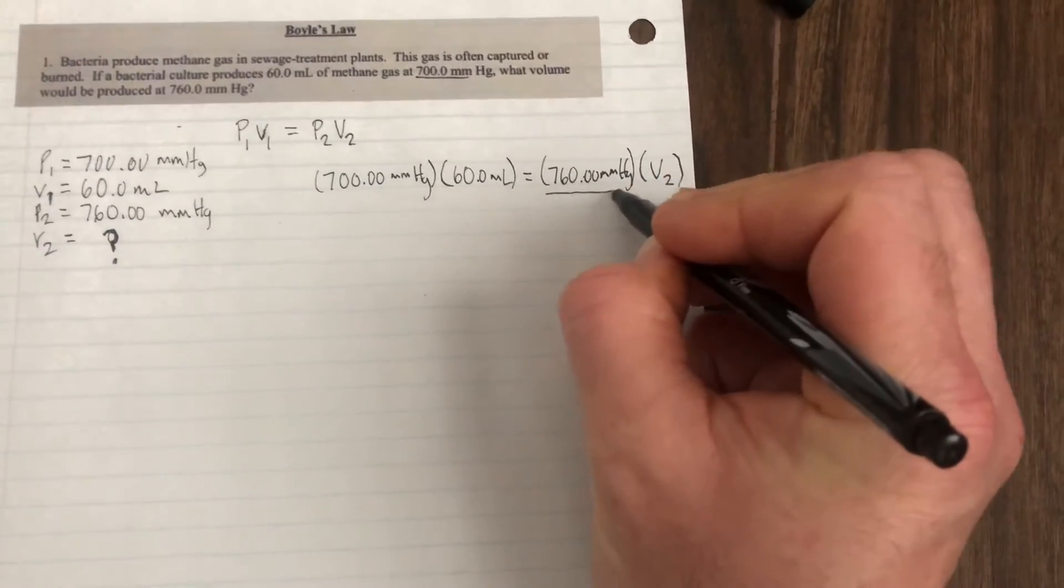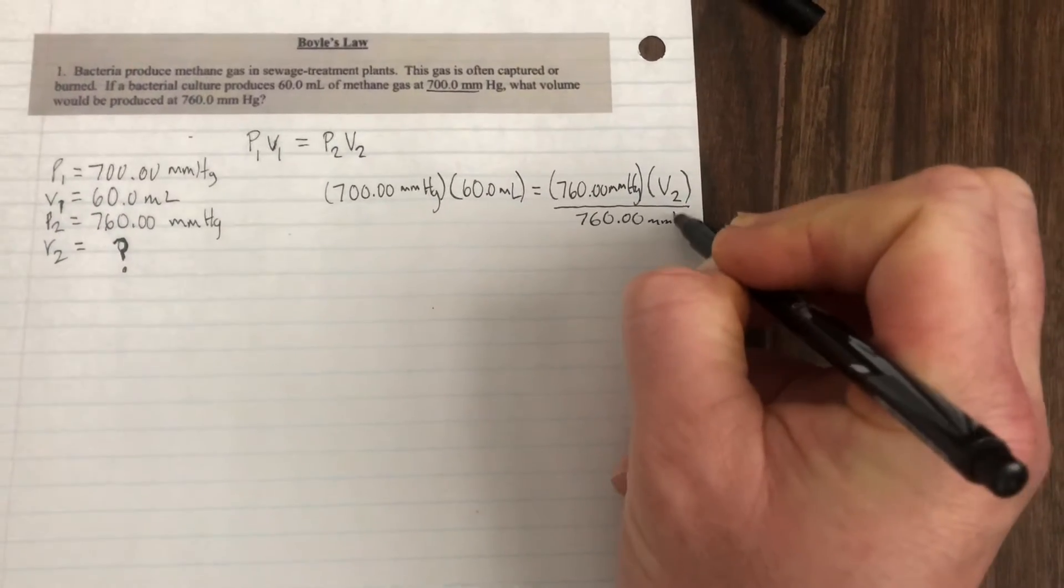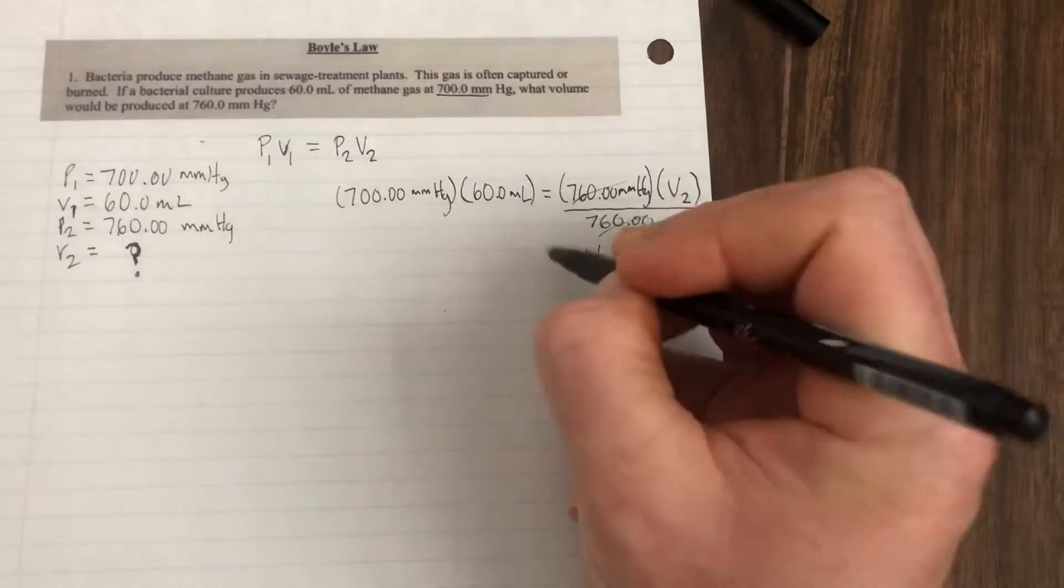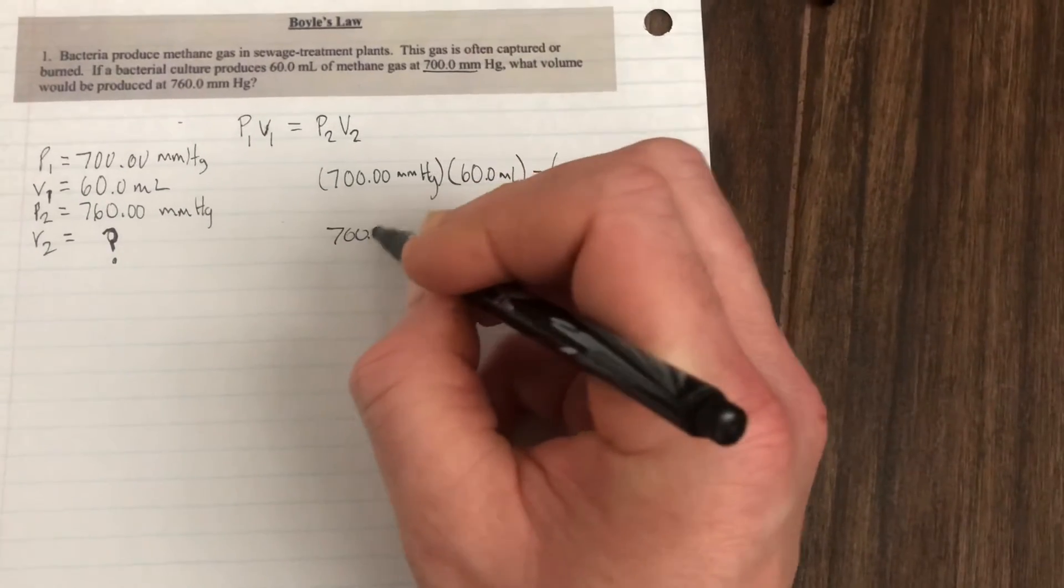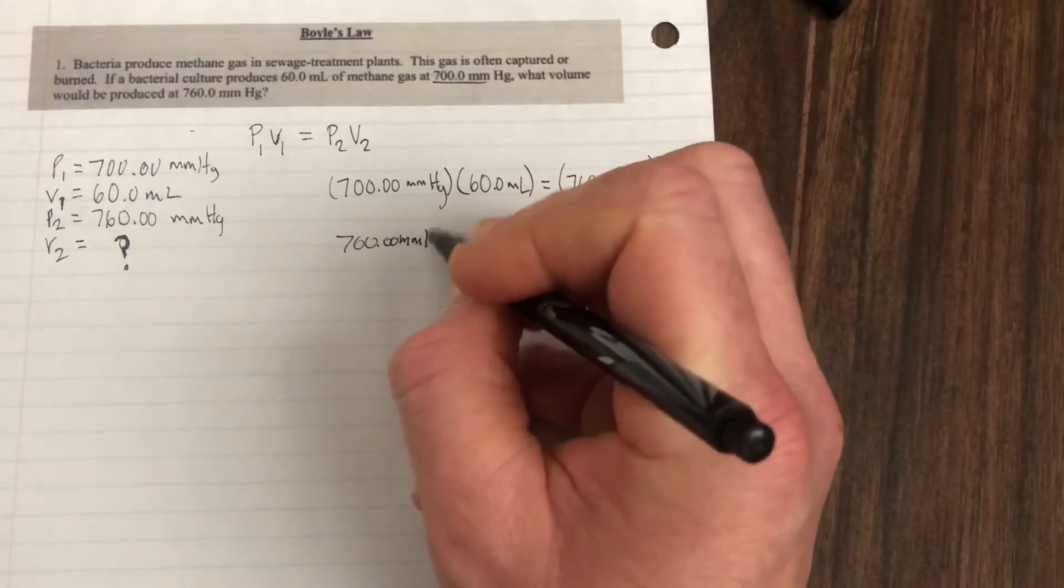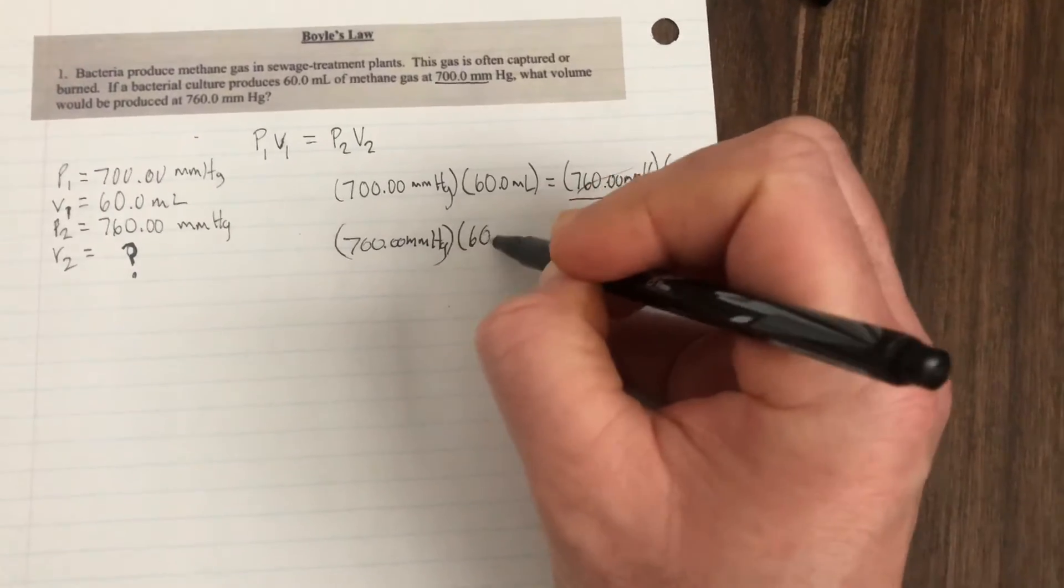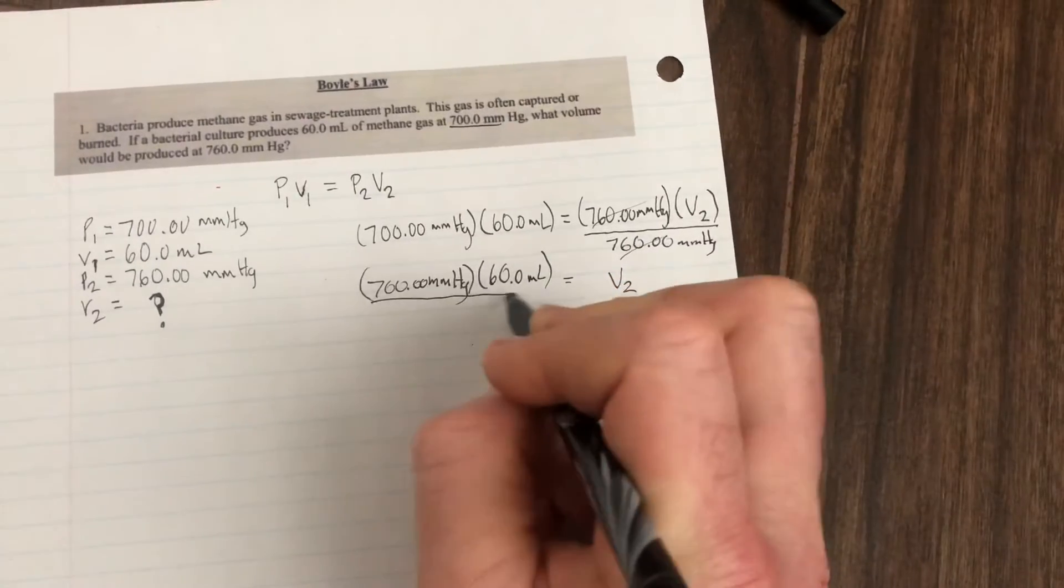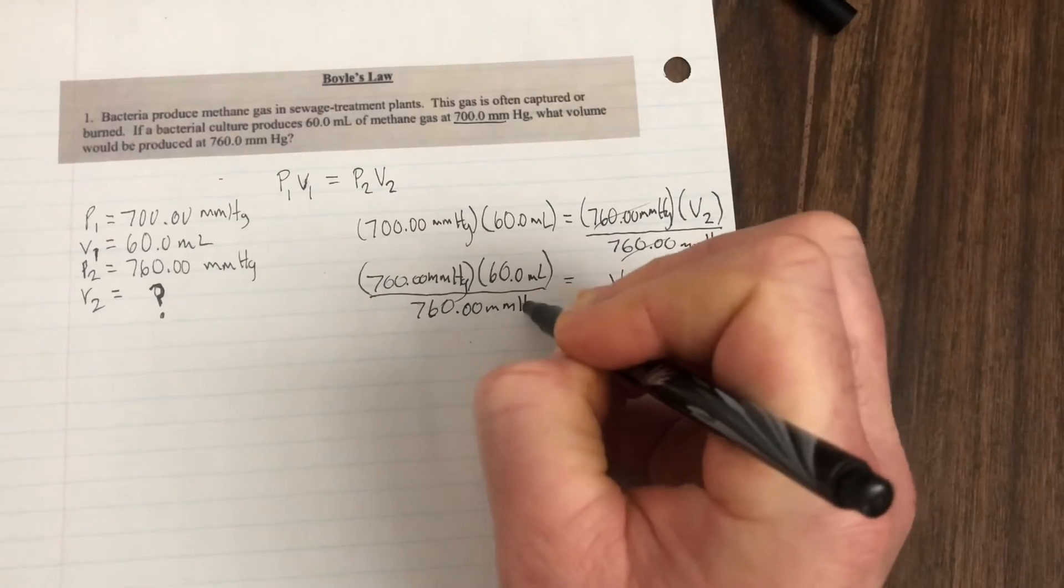So I'm going to divide out my 760 millimeters of mercury on this side, which is going to leave me with V2. But I have to do the same on the other side as well. So it's going to be 700 millimeters of mercury times 60 milliliters, all divided by 760 millimeters of mercury.